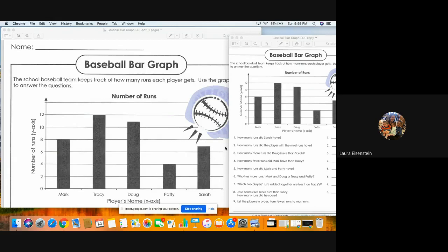Number two, how many runs did the player with the most runs have? So you'd have to look and find the player that has the highest bar, and then you look and see how many runs they have. It doesn't say who is the player, it asks how many runs. So your answer would be a number, not the person's name.